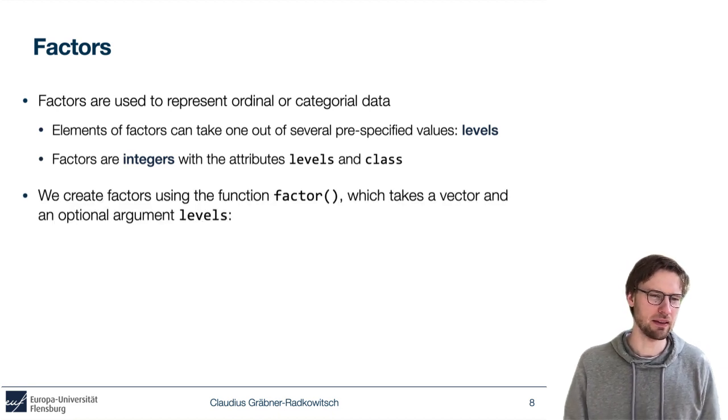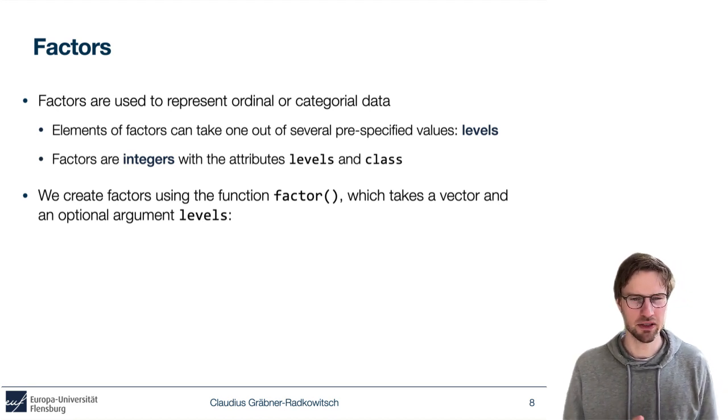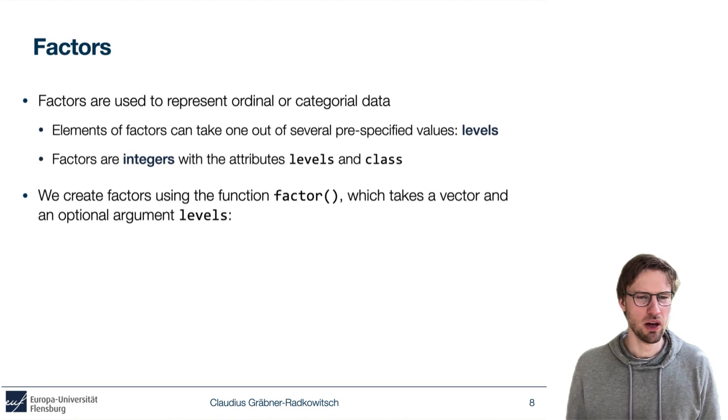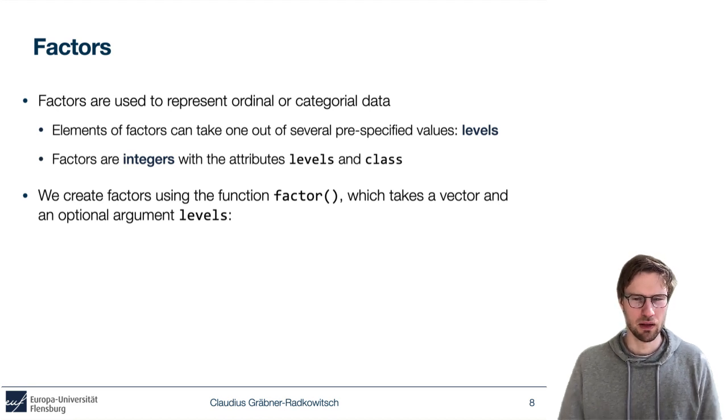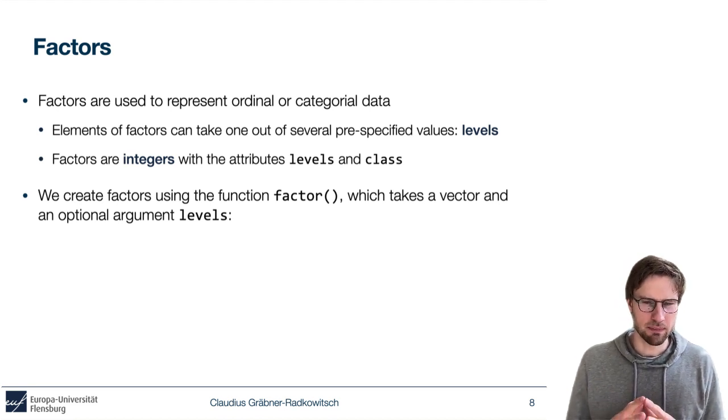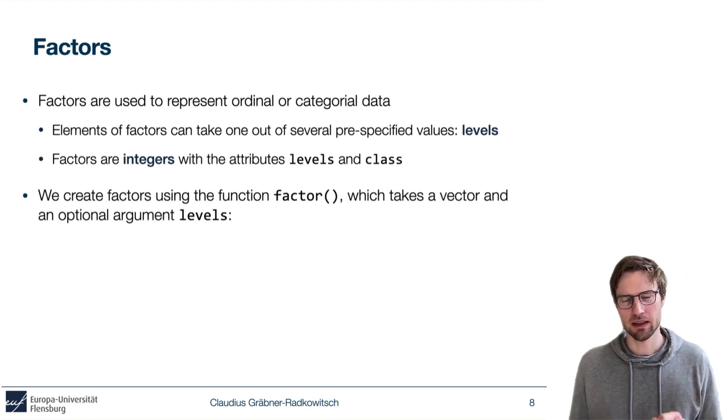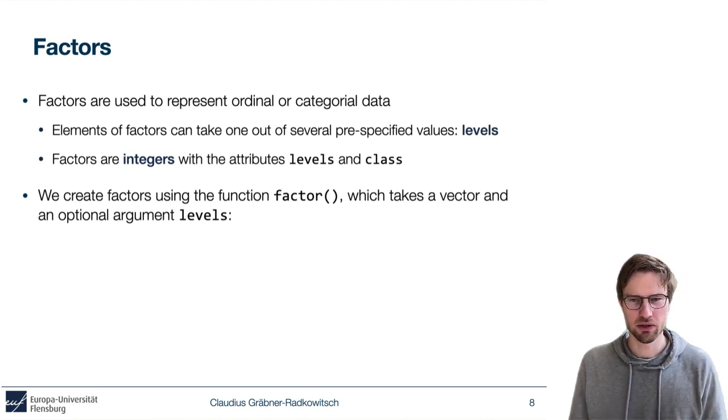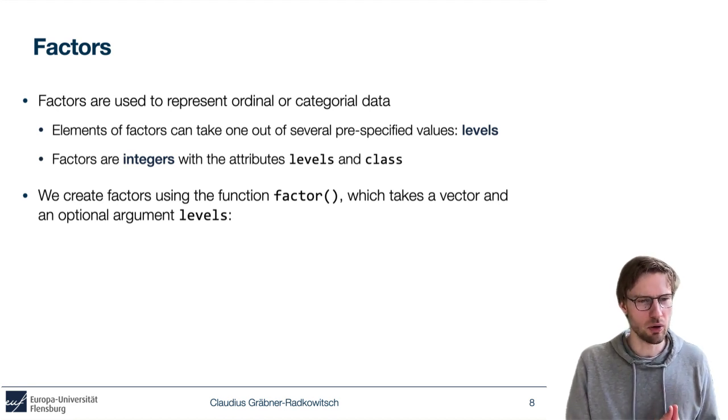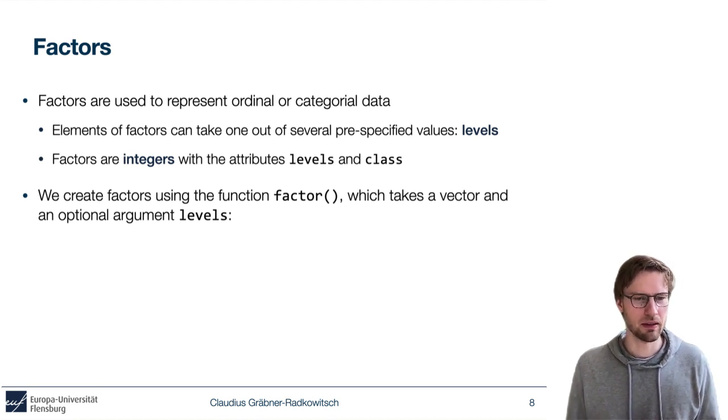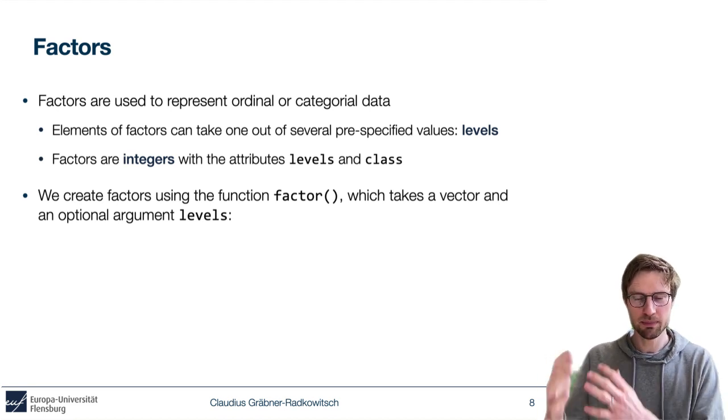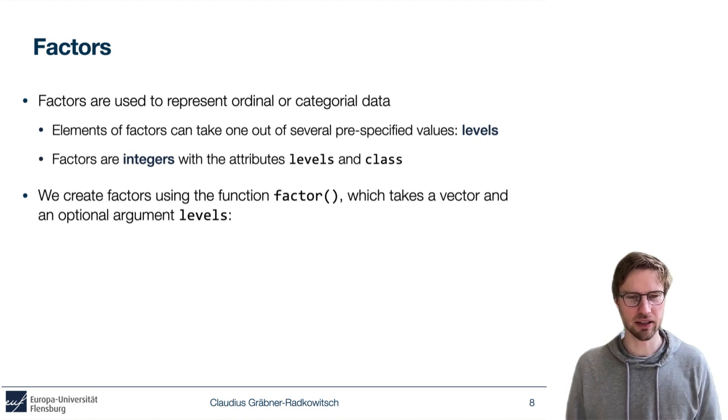Here's an example that we create using the function factor, which is the function that we always use when we create factors. The function factor takes a mandatory argument, and that is a vector. This vector is basically the basis for the new factor. And then there's an optional argument, namely the argument levels, that allows us to specify the levels explicitly.